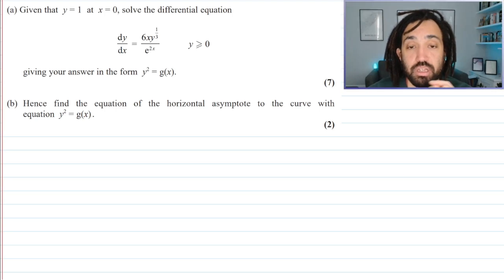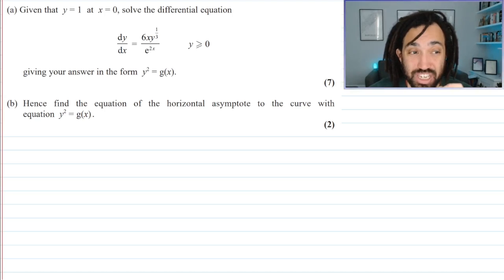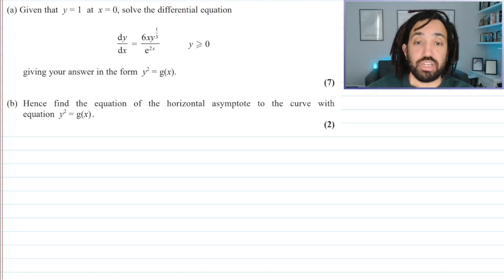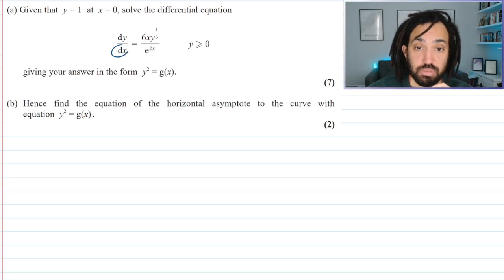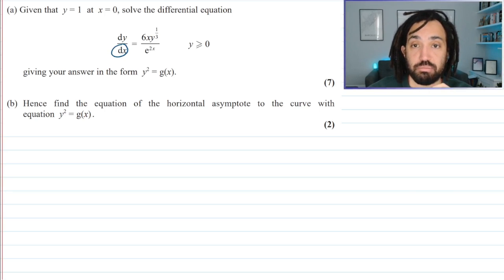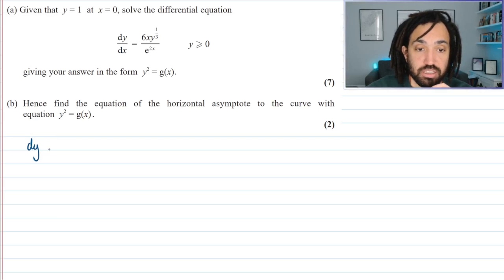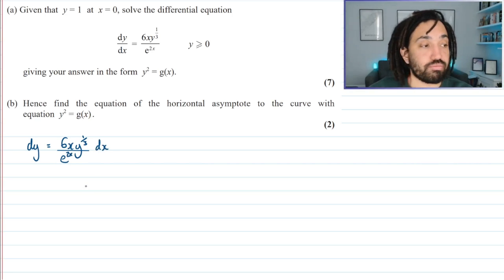We're going to use a technique called separation of variables. The first thing I do is look at the variable on the bottom here, which is dx, and I'm going to multiply both sides by dx. So doing that is going to give me dy equals 6xy to the power of 1 third over e to the 2x dx.